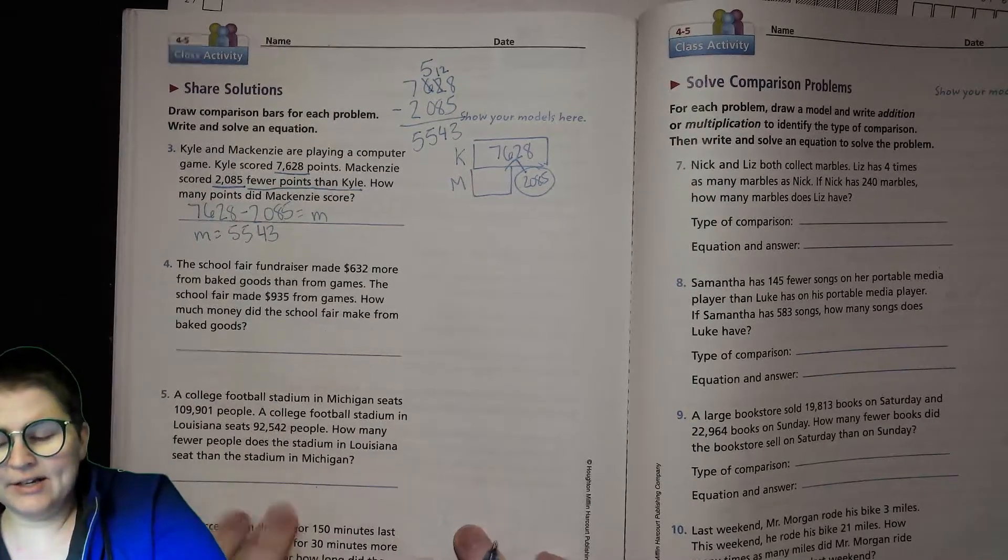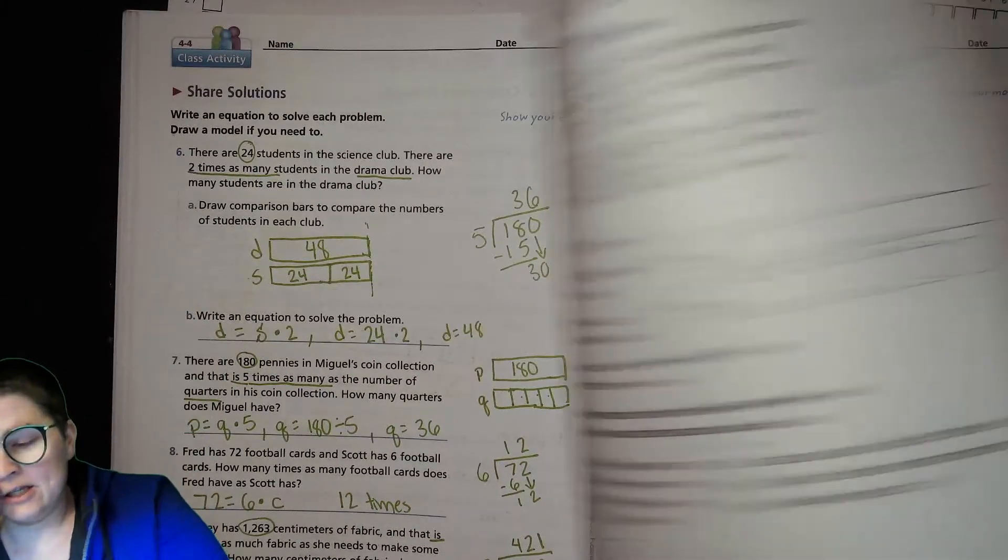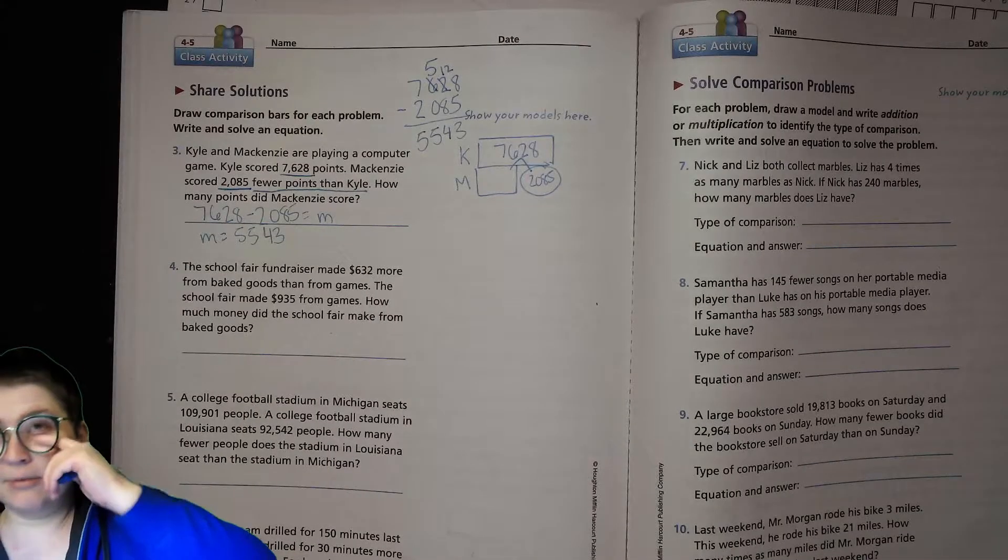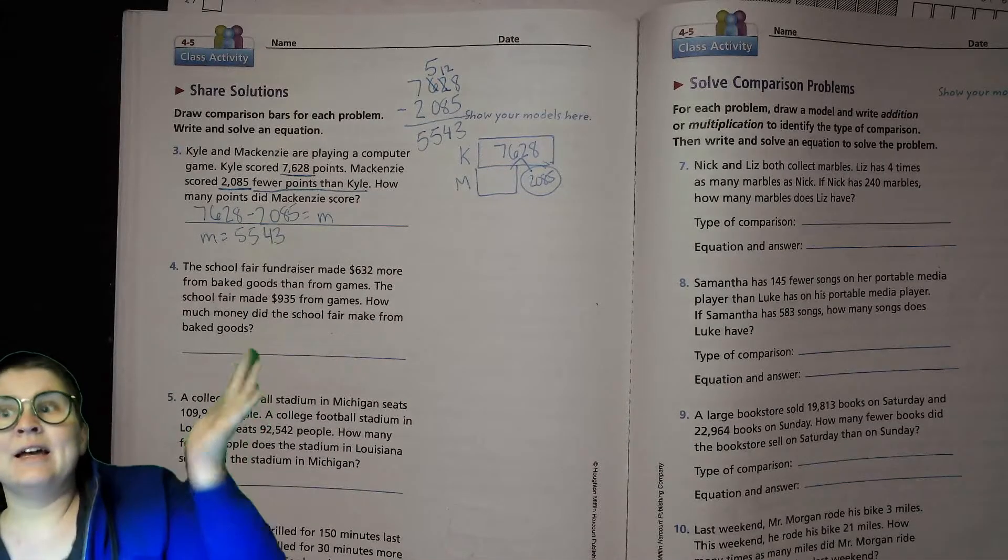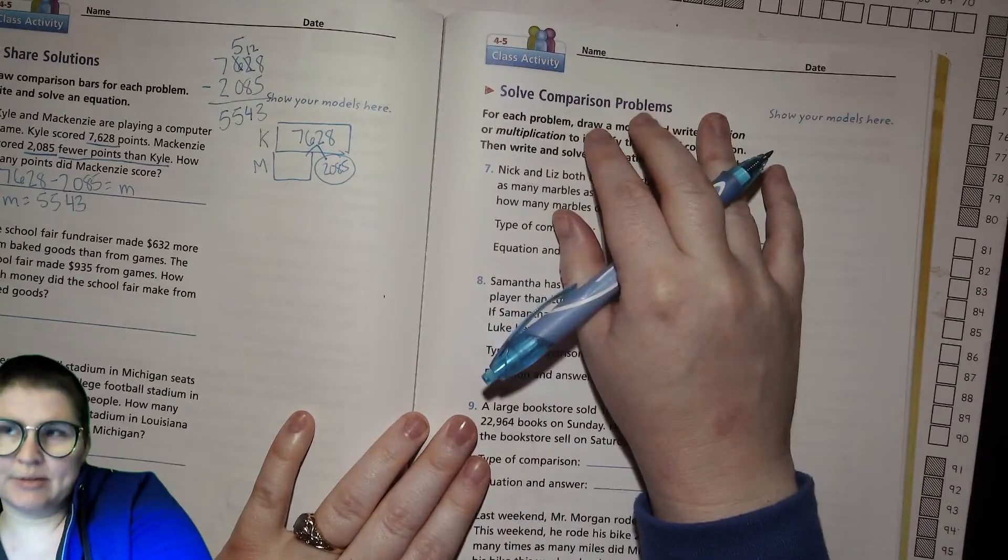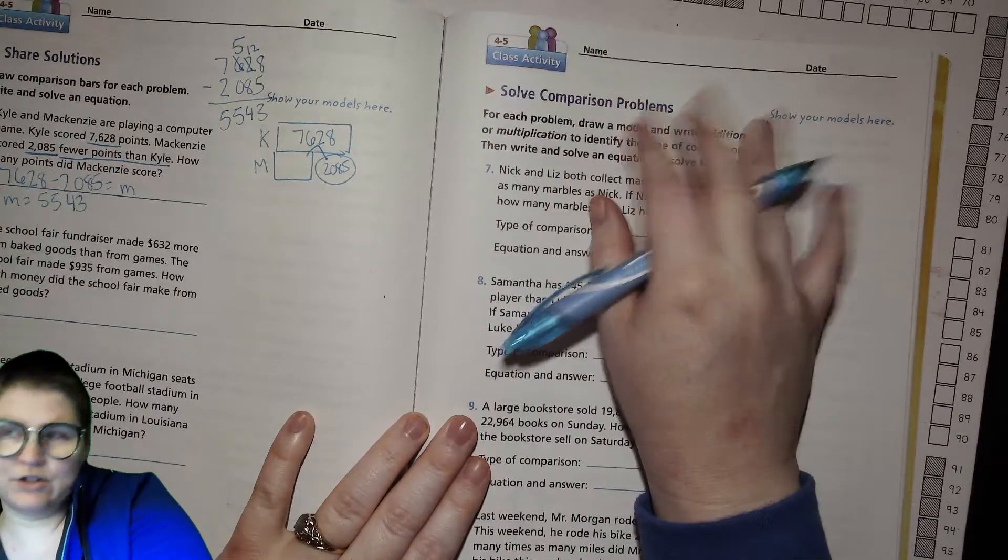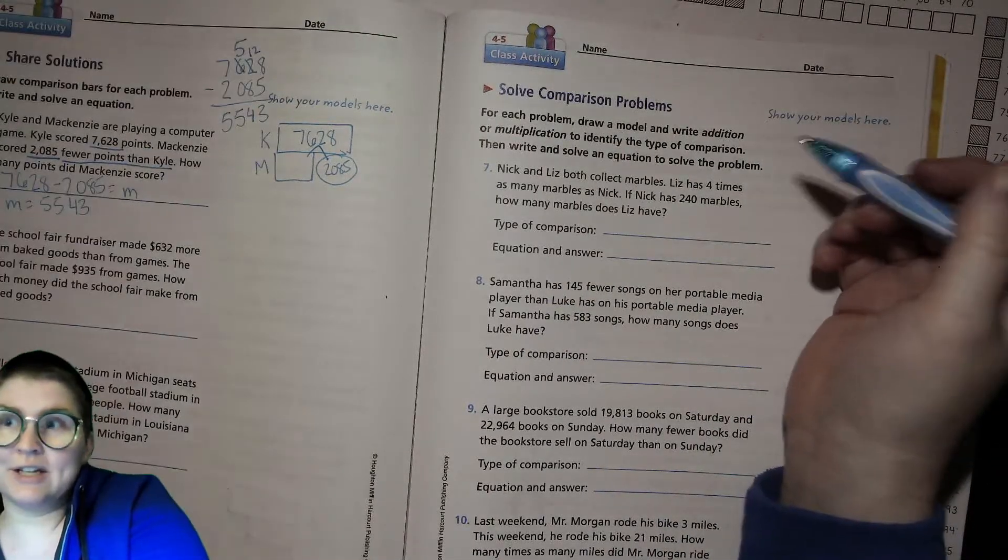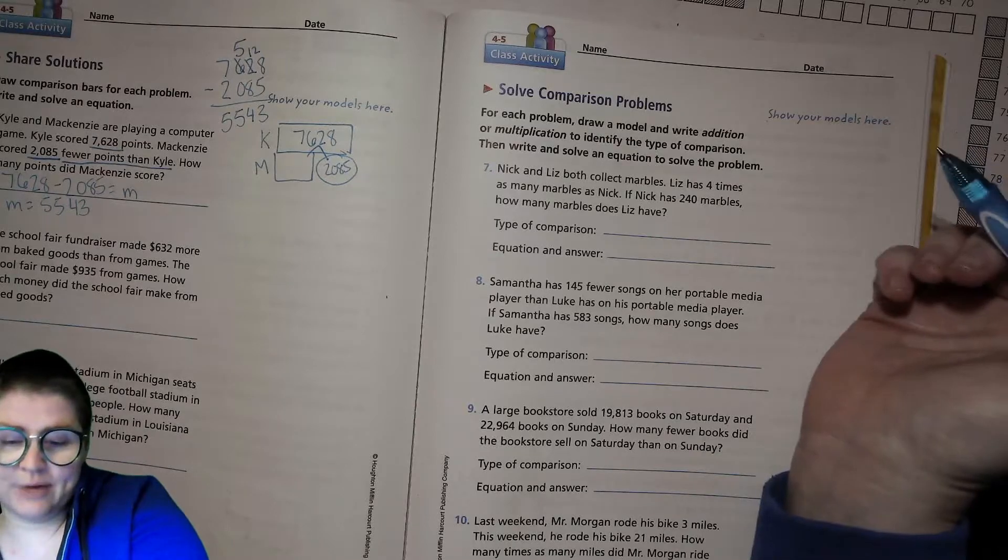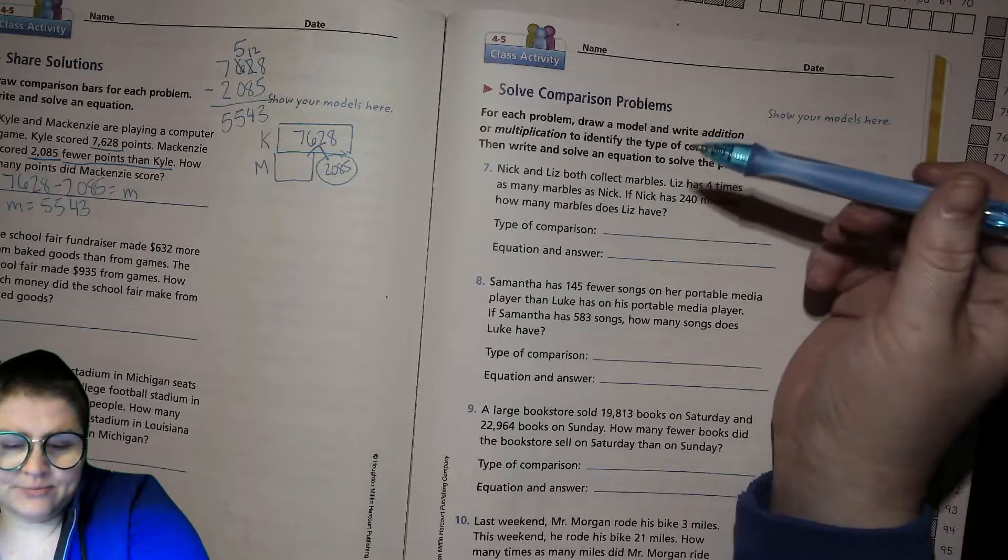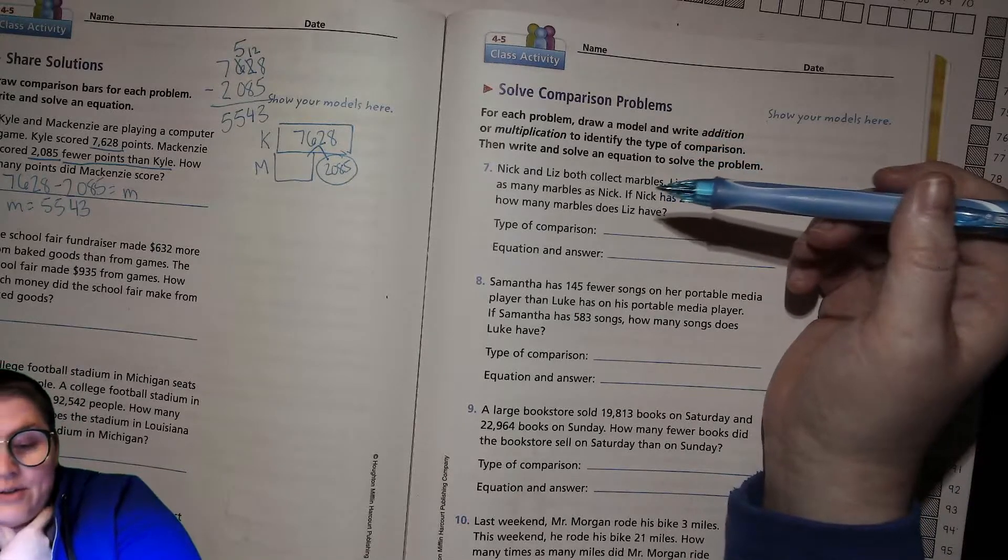We've done the multiplication and division in the past. This time we focused on addition and subtraction. You can keep working on these, and if you want to have some help, come see me at help zoom. Now we're going to think about reading a problem and trying to decide: is it multiplication or is it division, addition or subtraction? Because really, unless it's on a page that says only addition, you have to figure that out yourself. For each problem, draw a model, write an addition or multiplication to identify the type of comparison, then write and solve the equation.